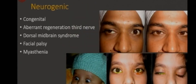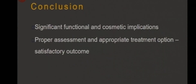Neurogenic causes include aberrant third nerve regeneration, myasthenia, and facial palsy, which is the most common neurogenic cause and will be discussed separately. To conclude, eyelid retraction causes significant functional and cosmetic implications, and we need to assess patients properly and formulate an appropriate treatment plan to achieve a satisfactory outcome. Thank you.